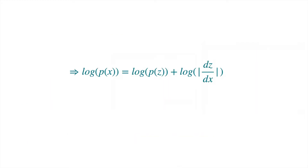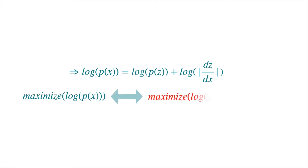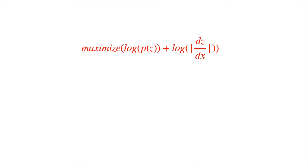So how can we use this relationship to learn the probability distribution of X? What we can do is maximize the log likelihood of X, which is the same as maximizing log P(Z) plus the log of the absolute value of this derivative. We can maximize this expression by doing gradient descent.